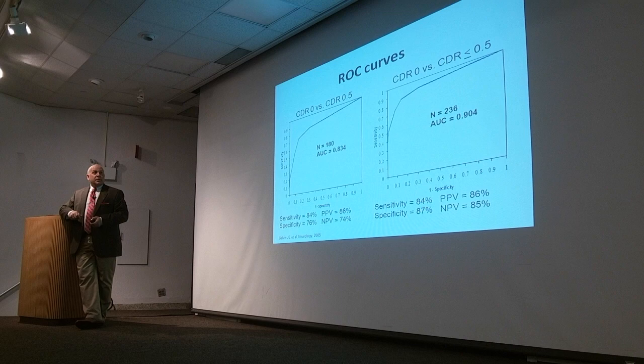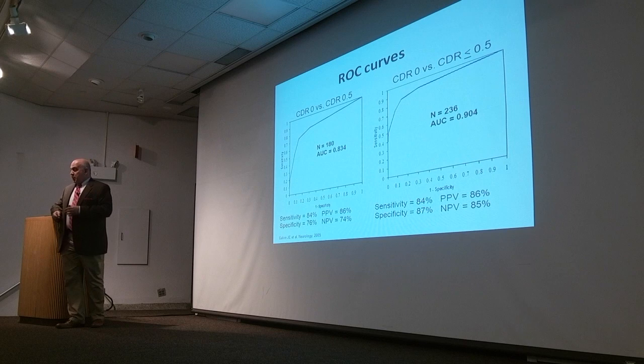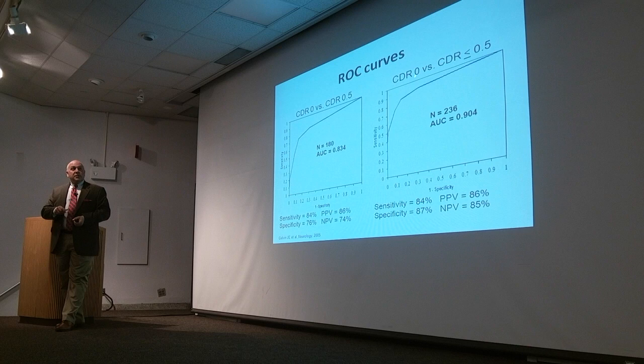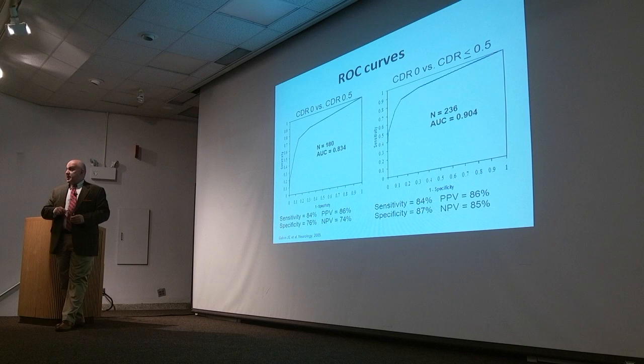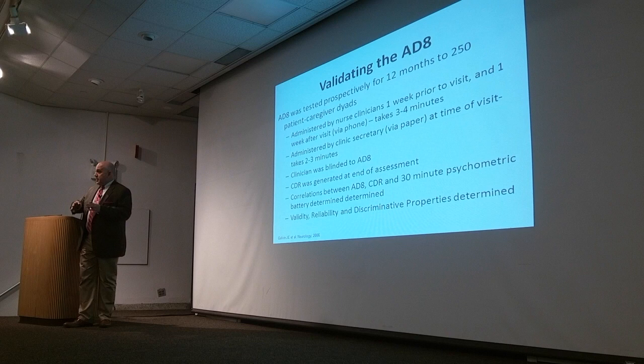These are the receiver operator characteristic curves, or ROC curves, which give us discrimination. The bigger the area under the curve, the more powerful the tool. In our first research development sample, to discriminate non-demented from any demented, it was over 90% discrimination. From CDR 0 versus 0.5 — the mild cognitive impairment stage — it was about 83%. We then validated in a clinical sample, in real-world clinical practice.